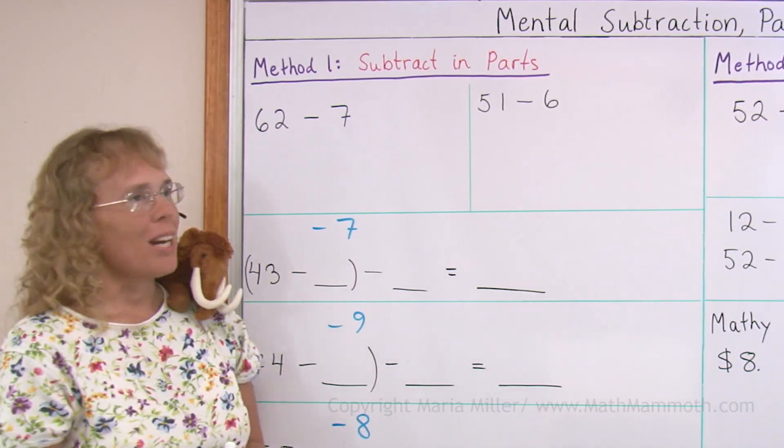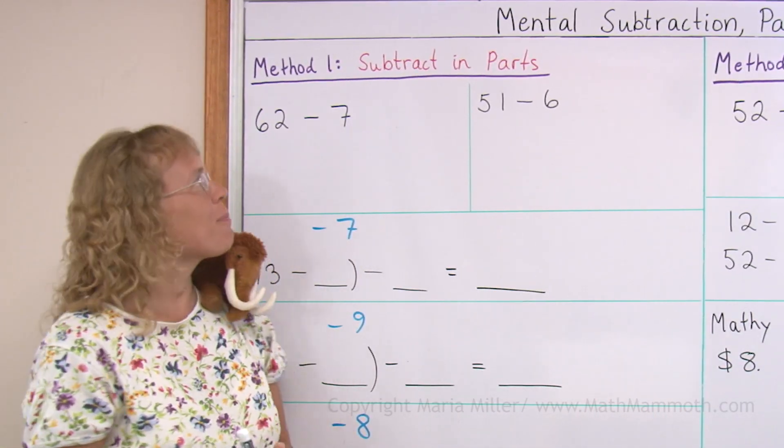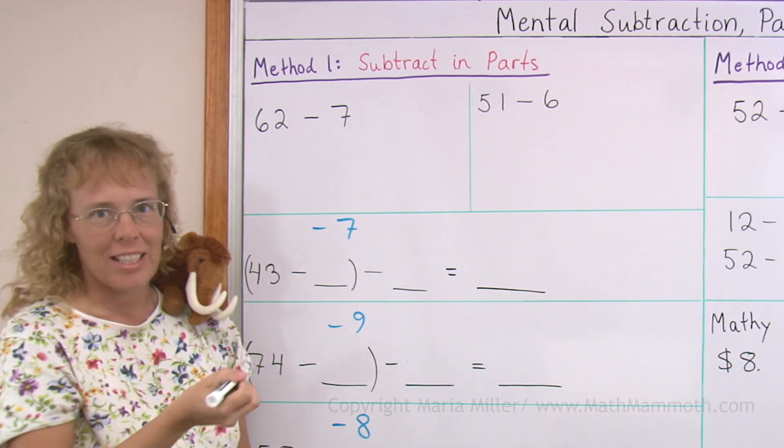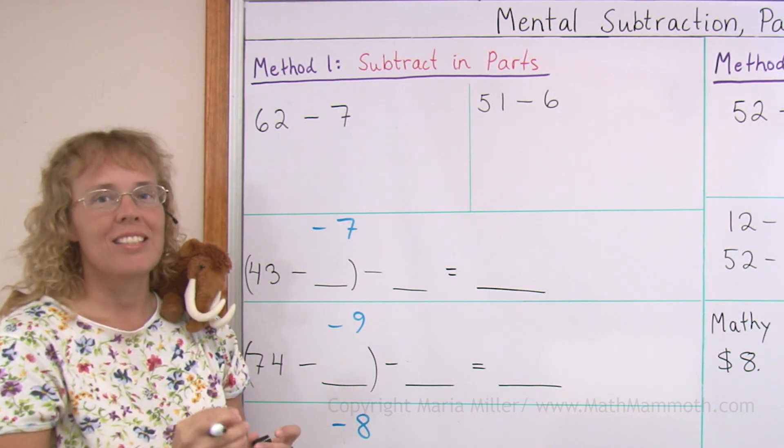First, our Method 1 is to subtract in parts. My example is 62 minus 7. And we will first subtract 2 to get to 60 and then some more.